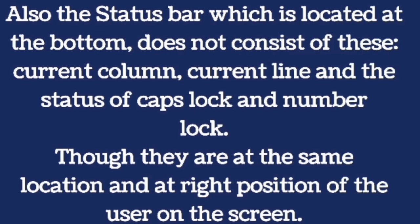That means the status bar is at the same location with the current column, current line, and the status of caps lock and num lock. But the current column, current line, and the status of caps lock and num lock are at the right side, which is not part of the status bar itself.